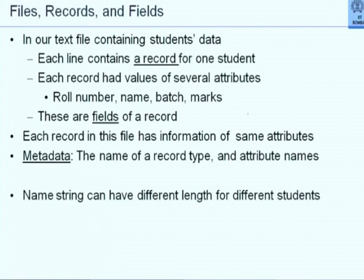File — you are already aware. As far as you are concerned, a file is a sequence of bytes. But if it is a text file, you can open it, see it, edit it, because you see the text symbols there. In our text file containing student data, we see different records. There is one record for one student. More importantly, each record has values of exactly four attributes. So the notion of record and attributes is important. The attributes we have here are role number, name, batch, and marks — these are called fields of a record. So the first field is role number, second is name, third is batch, fourth is marks. In a text file, these fields are separated by one or more blanks.